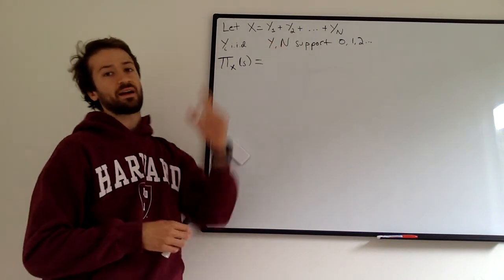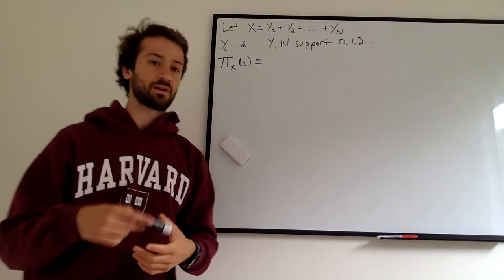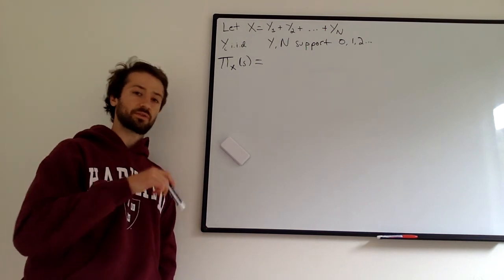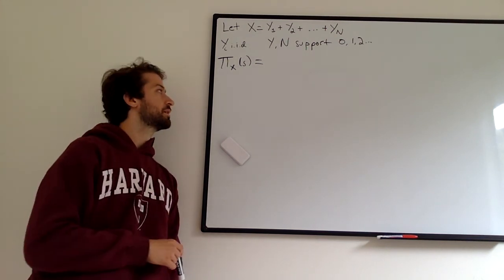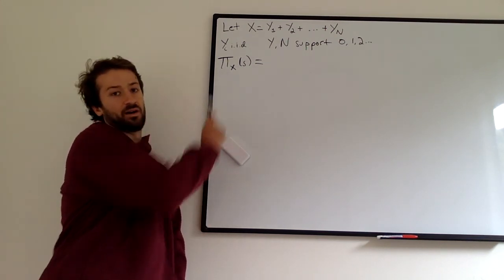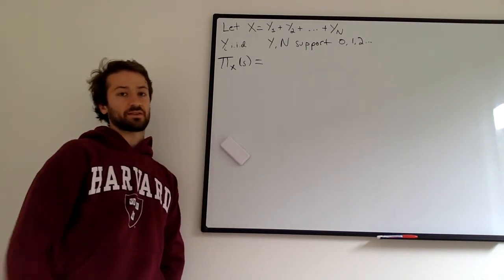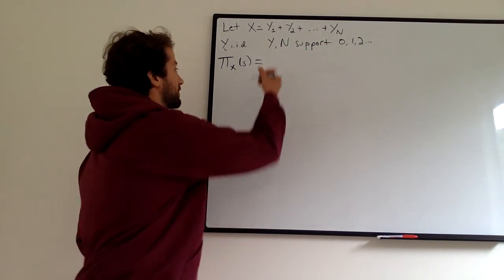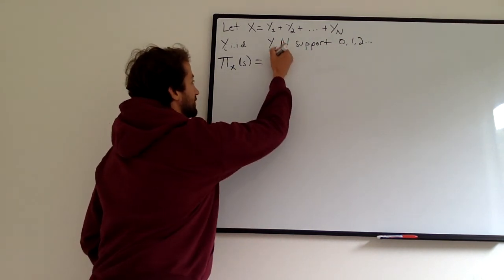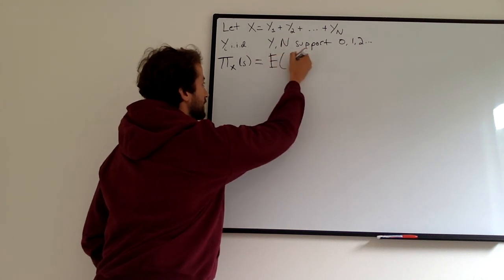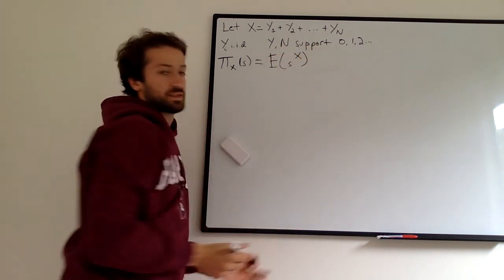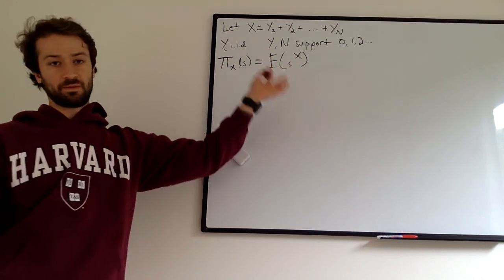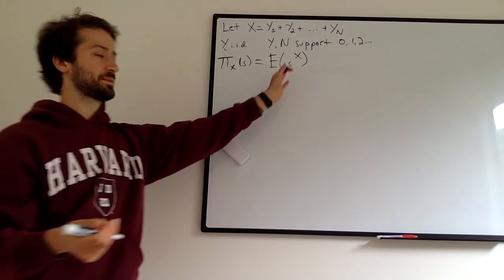Last thing is that Y and N have non-negative integer supports: 0, 1, 2, etc. And we want to solve the PGF of X. We can start the way I always like to start — just write the definition. You'll remember that it's just the expected value of the bookkeeping variable s to the power of X.